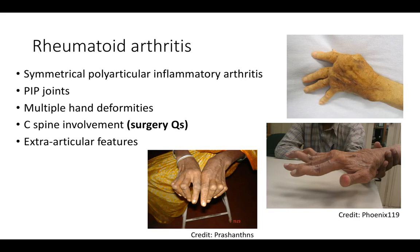Talking more about rheumatoid arthritis: the PIP joints are affected and there are multiple hand deformities. On the top right you can see ulnar deviation, and on the bottom right there is swan neck deformity, where there is flexion of the proximal interphalangeal joints and extension of the distal interphalangeal joints.